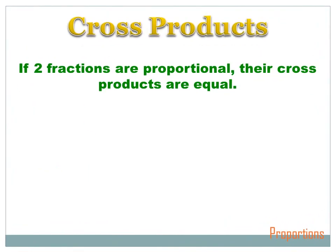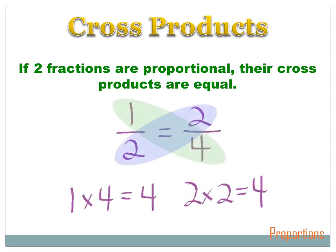There's another way to check if two fractions are proportional: if two fractions are proportional, their cross products are equal. If I've got two fractions, one over two and two over four, I multiply the numerator of the first fraction by the denominator of the second — that's called cross products. One times four equals four, and two times two equals four. So one over two is proportional to two over four.